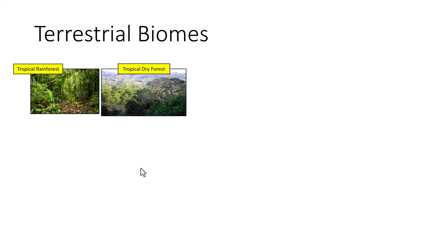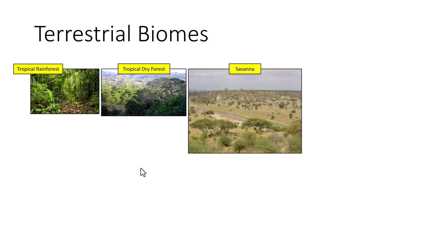Tropical dry forests are similar to tropical rainforests but have decreased rainfall — they are drier and less humid. They are warm year-round but have an alternating wet and dry season, with heavy rainfall in certain parts of the year and none in others. They can also be subjected to erosion from high rainfall but do receive some dry weather, unlike the tropical rainforest.